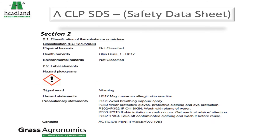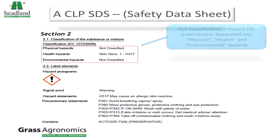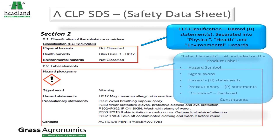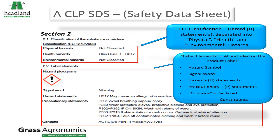Section 16 gives additional information such as if the supplier's business address has changed and the date of this change. Section 2 is a bit more in-depth, showing the hazard statements and whether they refer to physical, health and environmental hazards, and there's also a large section which appears on the product label, showing what hazards are present and the constituent product that creates the hazard warning.